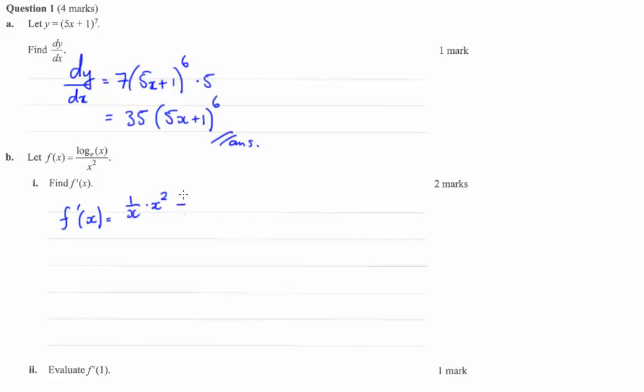minus the derivative of the bottom, which is 2x, times the top, which is the natural log of x, all over the bottom squared, which becomes x to the power of 4.